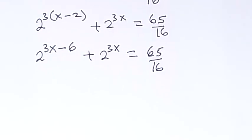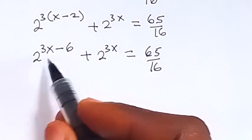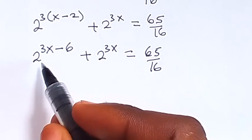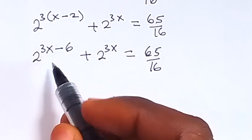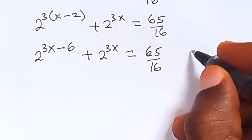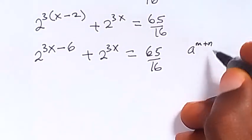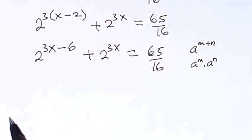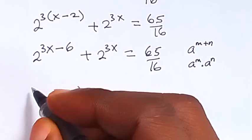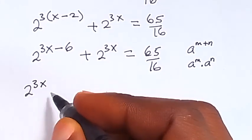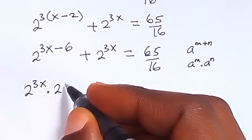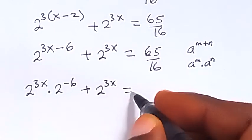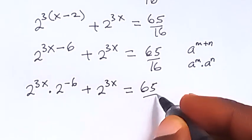The next step is to separate this to affect the power. From the law of indices, when we have a raised to power m plus n, it is the same as a raised to power m multiplied by a raised to power n. So let's separate this: 2 raised to power 3x, multiplied by 2 raised to power minus 6, plus 2 raised to power 3x, equals to 65 over 16.